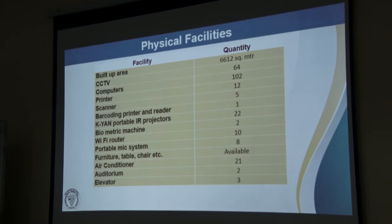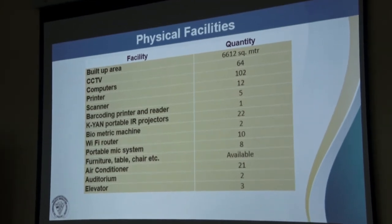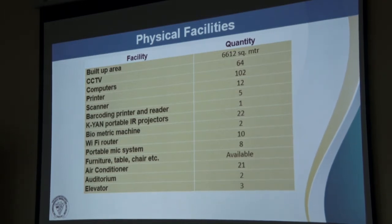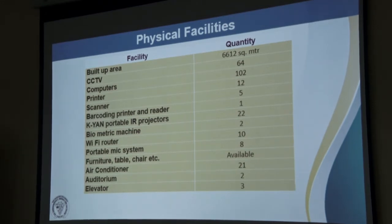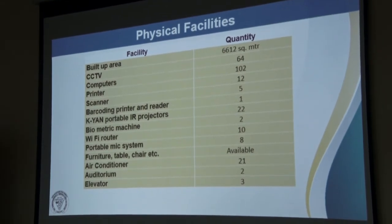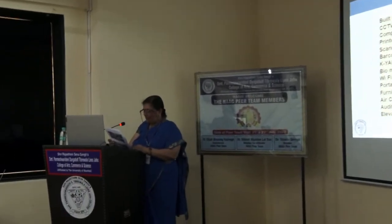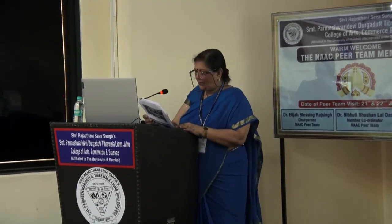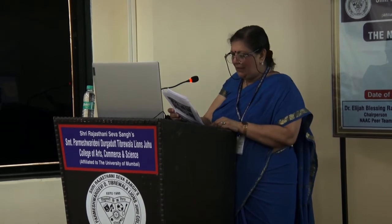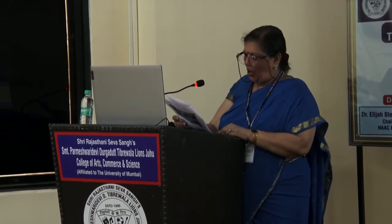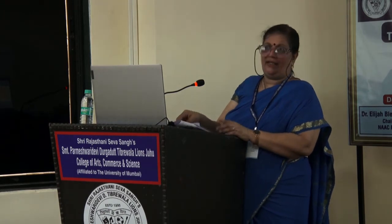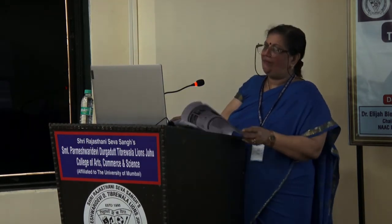Now for physical facilities: our built-up area is 6,612 square meters. We have 64 CCTV cameras, 102 computers, 12 printers, 5 scanners, 1 barcoding printer, 22 portable IR projectors, 2 biometric machines, 8 Wi-Fi routers, 21 air conditioners, 2 auditoriums, and 3 elevators — two lifts in the B building and one in block A.